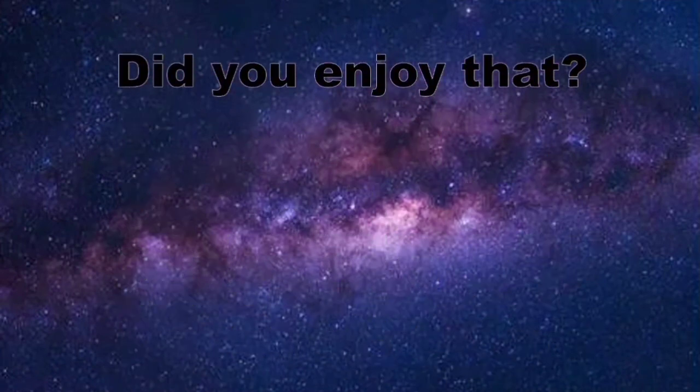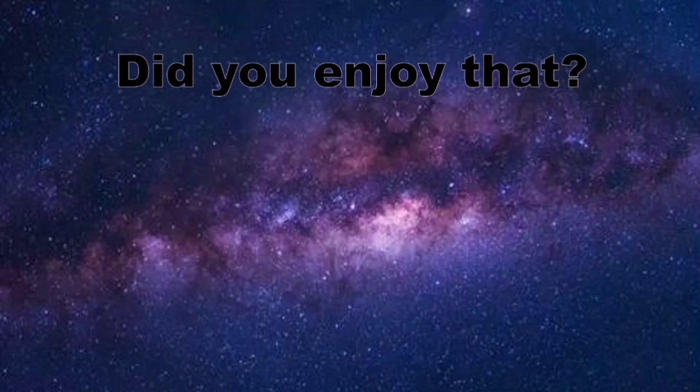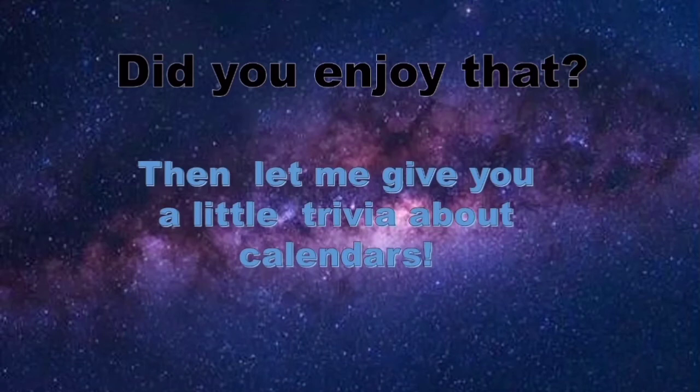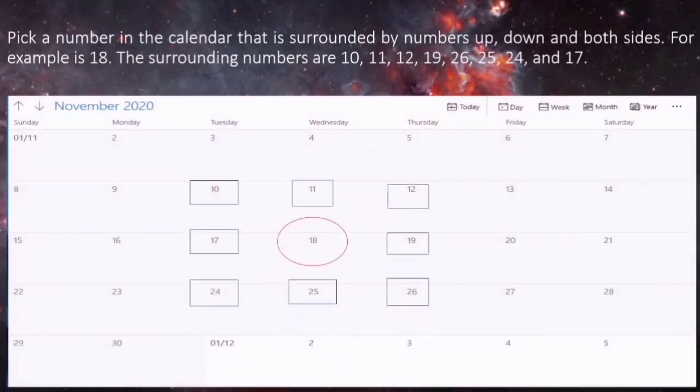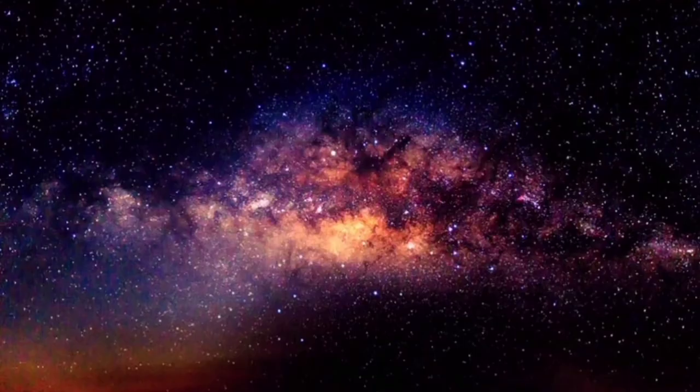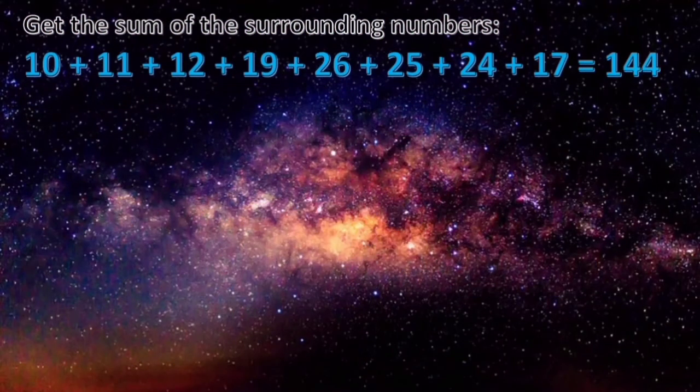Did you enjoy that? Then let us have another one. I don't know if you already know this but this is a product of my own curiosity and imagination about calendars. Let me give you a little trivia about calendars. Pick a number in the calendar that is surrounded by numbers up, down and both sides. For example, the number I chose is 18. The surrounding numbers are 10, 11, 12, 19, 26, 25, 24 and 17.